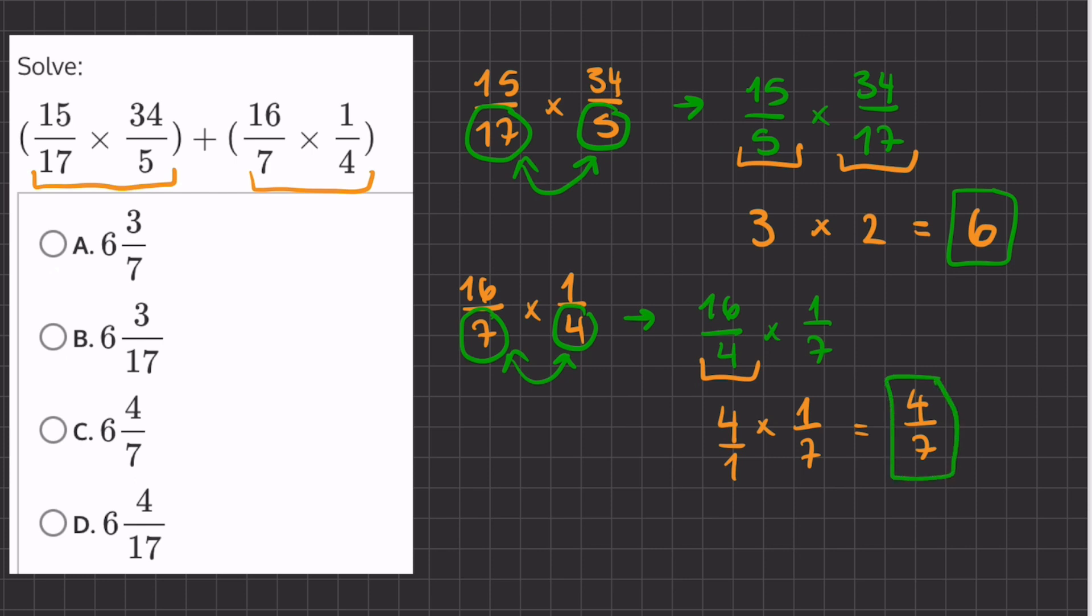So it's going to look like this. We're going to have 6 plus 4 over 7. And when we add these two numbers we will just have 6 and 4 sevenths, which will be our final answer and corresponds to answer C.